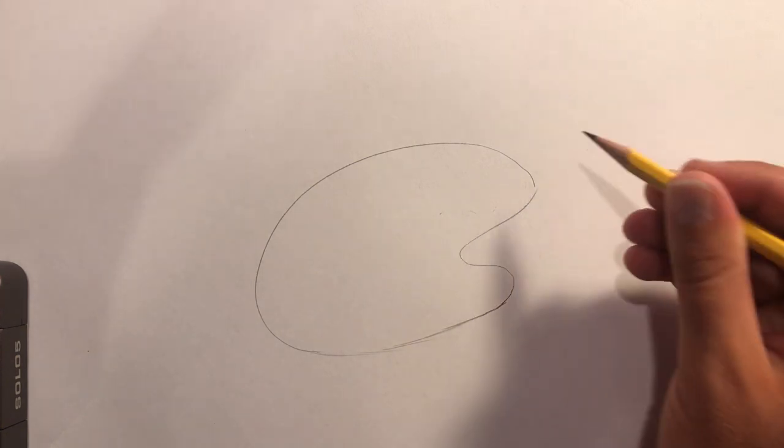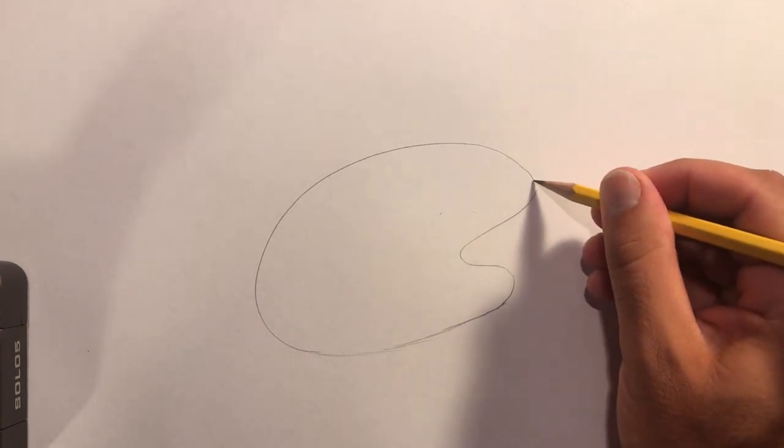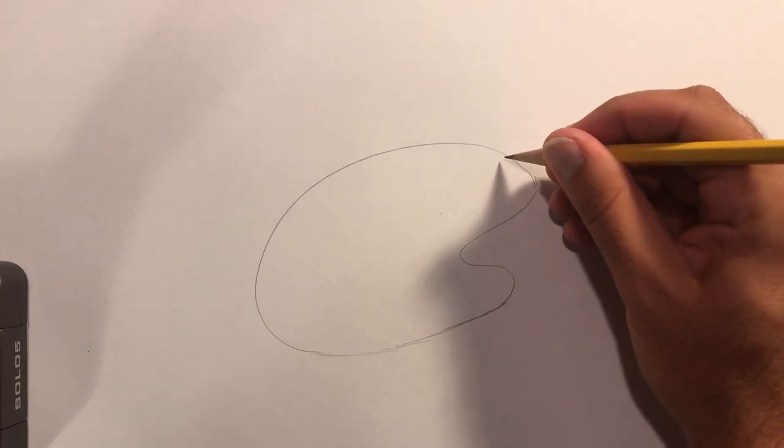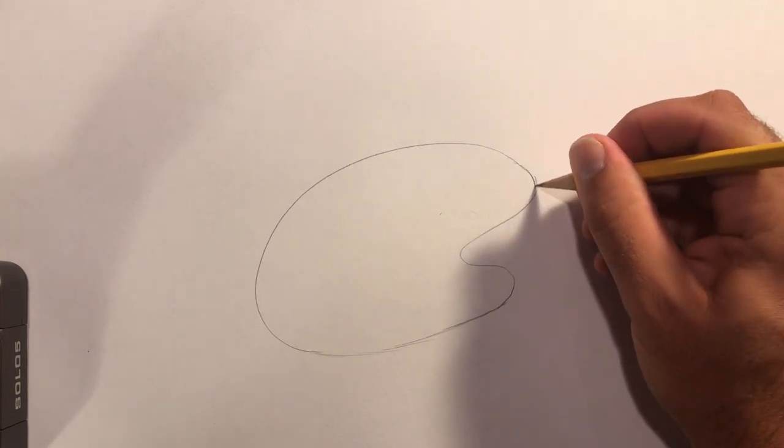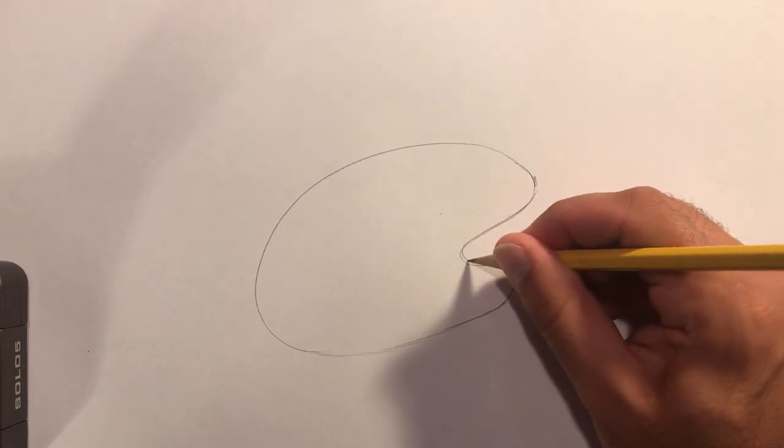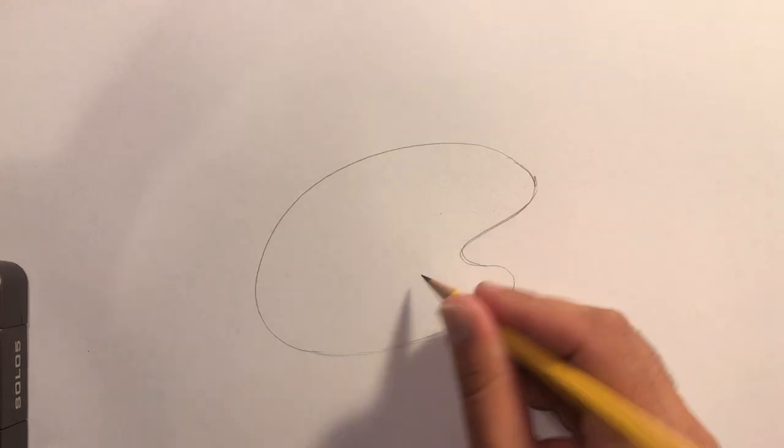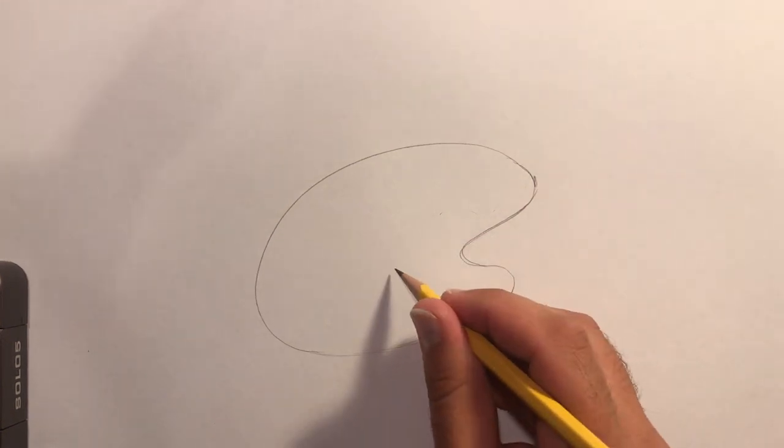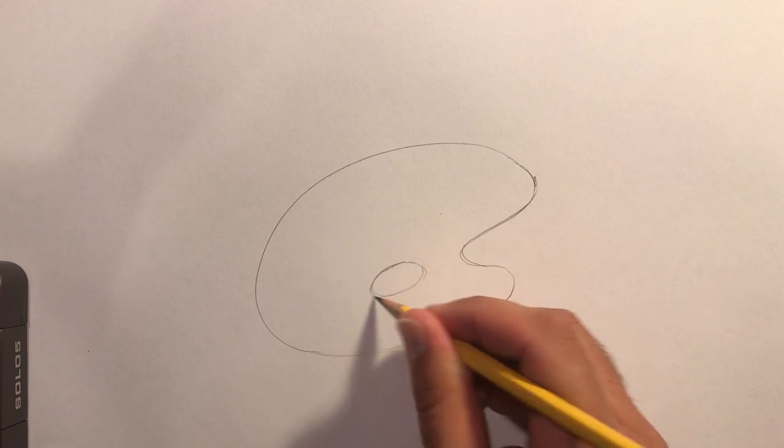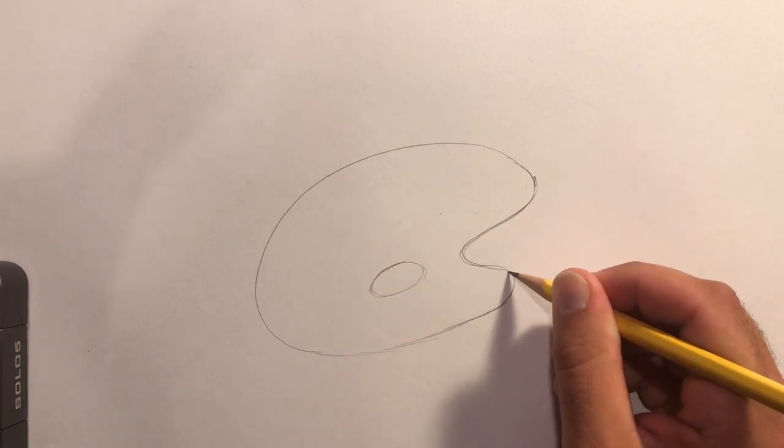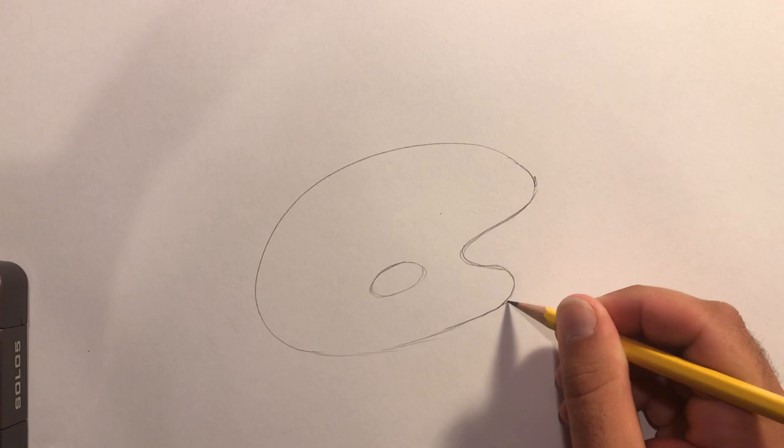That's going to curve like this. This is the opening where you would put your hand to hold it, or your arm goes in here. And then there's a hole over here, and it looks like this. Okay, now...